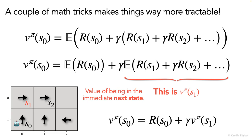Now this equation is much simpler, but notice that it's got this recurrent nature. For example, we're computing the value of being in state s zero, and to do that we need the value of being in state s one. But how would we get that value? Well, to get that value, we'll need to have the value of being in state s two, and so on. But it will soon turn out that this is easily solvable as a linear system of equations.